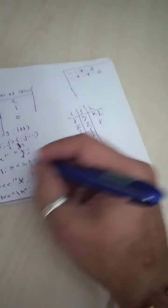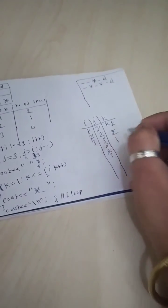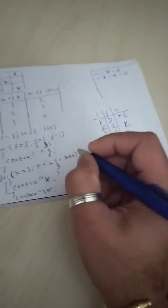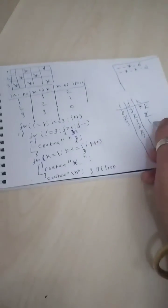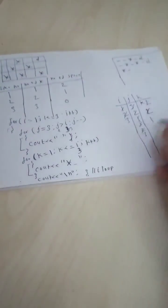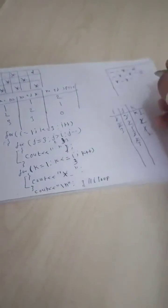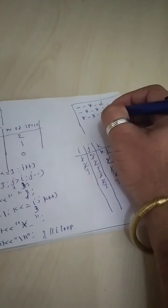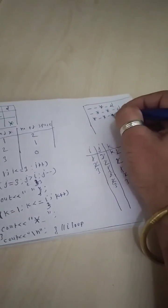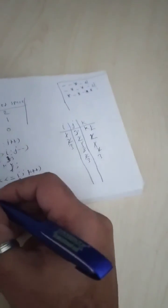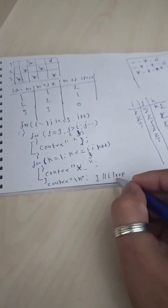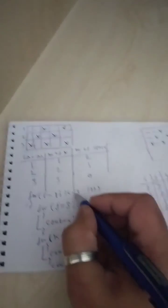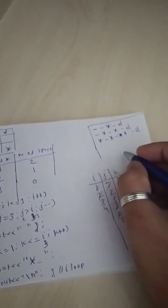K becomes one again. The value of i is three, so the K loop executes three times. For k equals one: star and space. For k equals two: star and space. For k equals three: star and space. The loop finishes, and the cout newline executes. The i loop ends; i becomes four, but the condition i less than or equal to three is not satisfied, so the loop ends and we get the right pattern we were expecting.